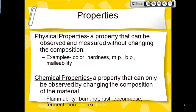Then you have chemical properties. Chemical properties are properties that you can only see when you actually change what the matter is made out of — when you change it from one type of matter into another. Chemical properties include things like how flammable it is, whether it will burn, will it rot, will it rust, does it decompose, ferment, corrode, or explode.